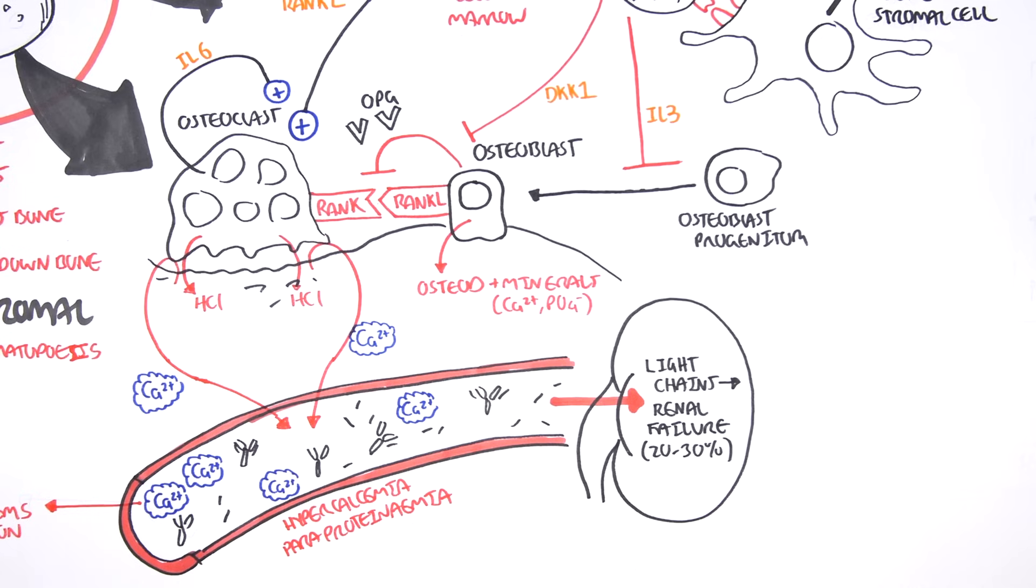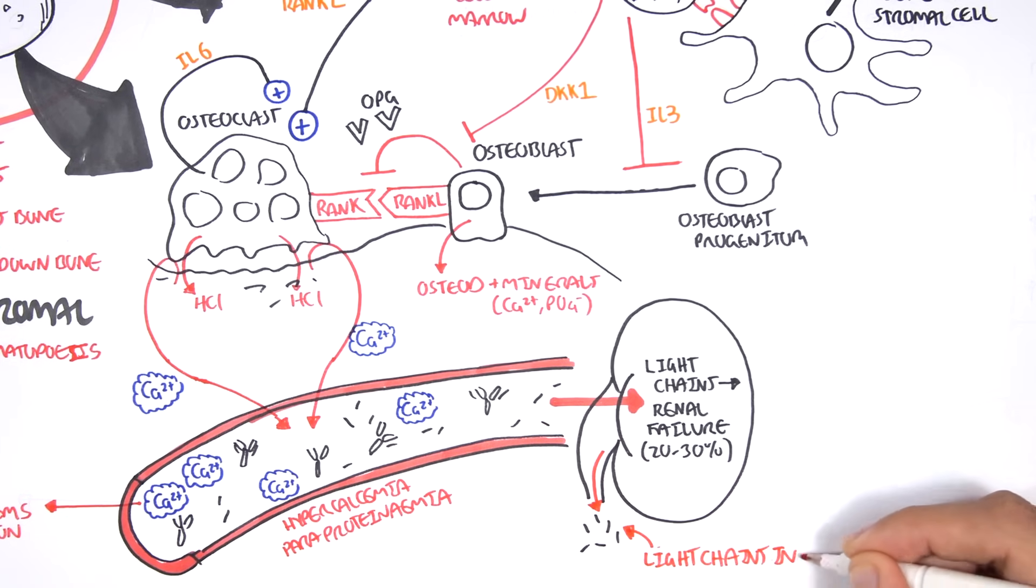The light chains are also urinated out. They're peed out, which is a clinical feature of multiple myeloma. When light chains are urinated, it is known as Benz-Jones proteins.